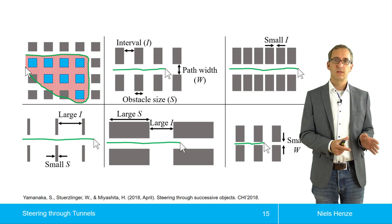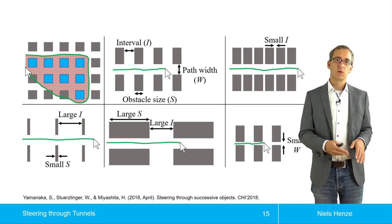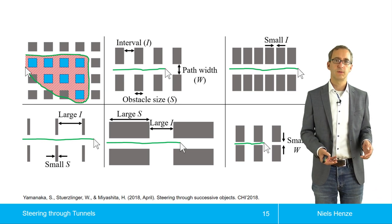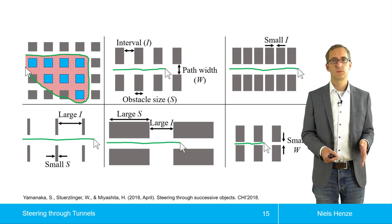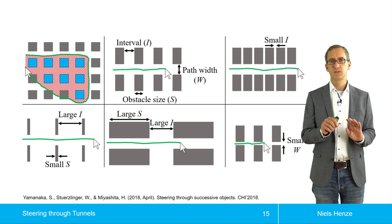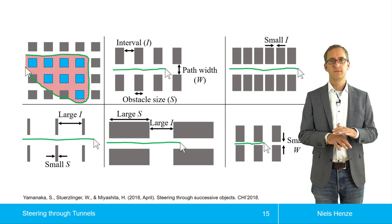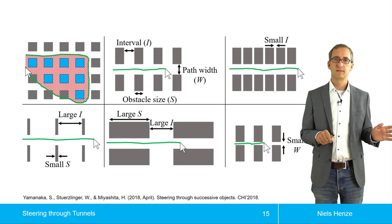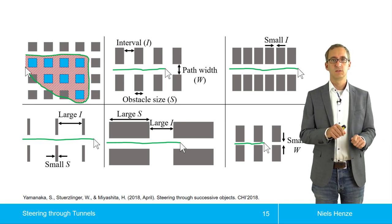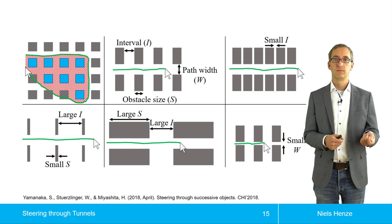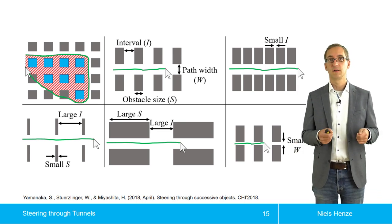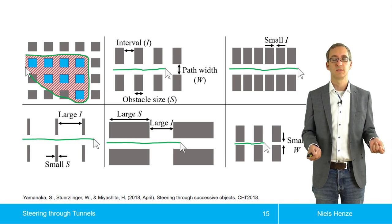People also use steering law as a basis for going even further. So this is an example from more recent work where colleagues try to model circling objects. So you have a grid maybe of objects, and now you want to select some of them. And then you don't want to go through objects that you don't want to select.